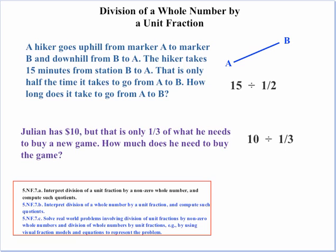Let's look at the second example. Julian has $10, but that's only one-third of what he needs to buy a new game. So how much does he need? Students can already reason that if $10 is only one-third of what he needs, he needs three times as much — so he's going to need $30. It's important that they set it up properly with 10 and one-third. Students can easily see from the context that multiplying by the reciprocal — three — gives them $30. Working problems in contexts like this really helps students understand the rationale for why you multiply by the reciprocal of the divisor.